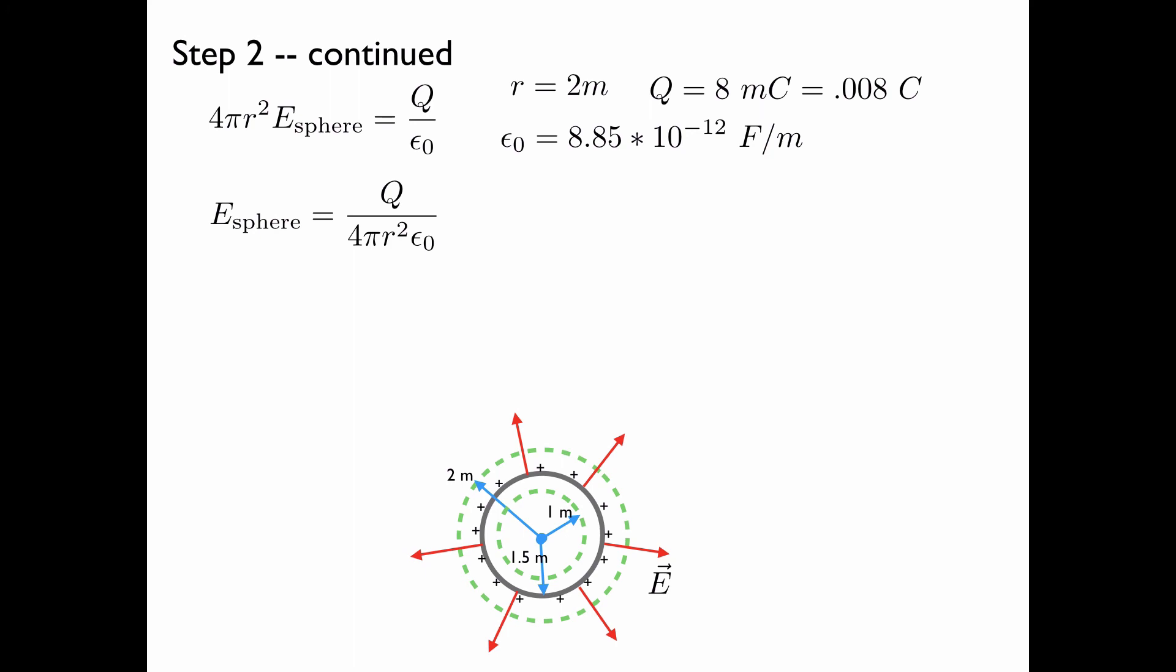Rearranging the above expression, we get this, and then plugging in the numbers from above, we come up with this. Evaluating this expression gives an electric field of 18 times 10 to the sixth volts per meter.